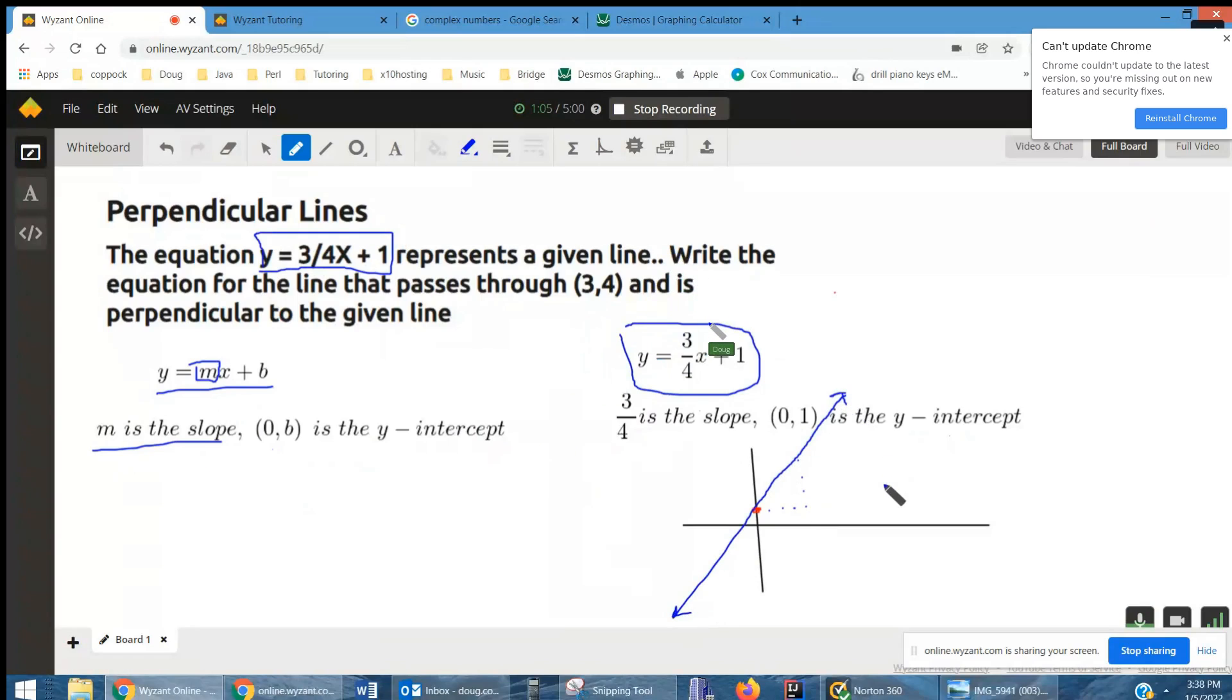Now as long as the slope remains three-fourths, if you have a different y-intercept, the lines will be parallel.